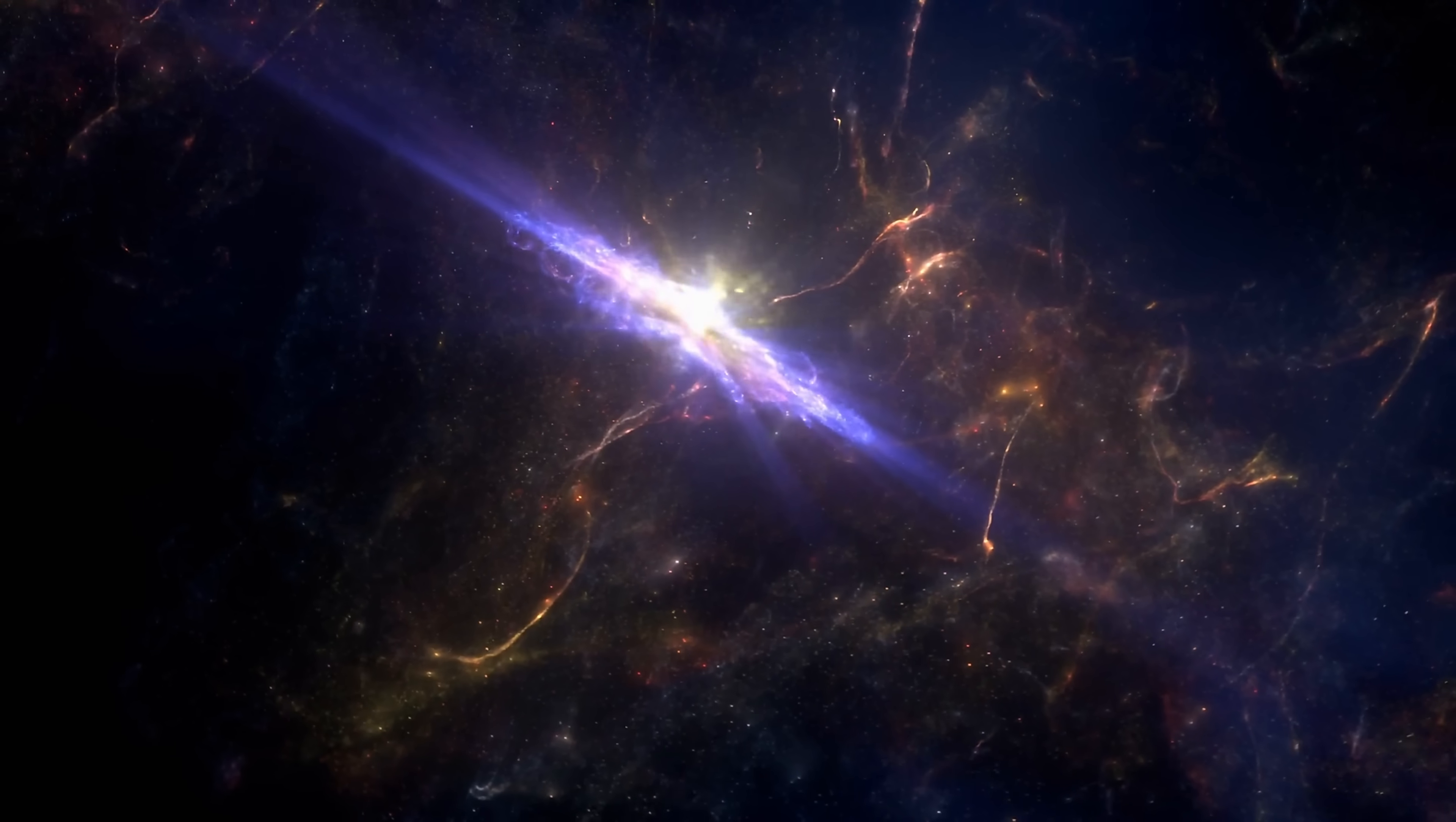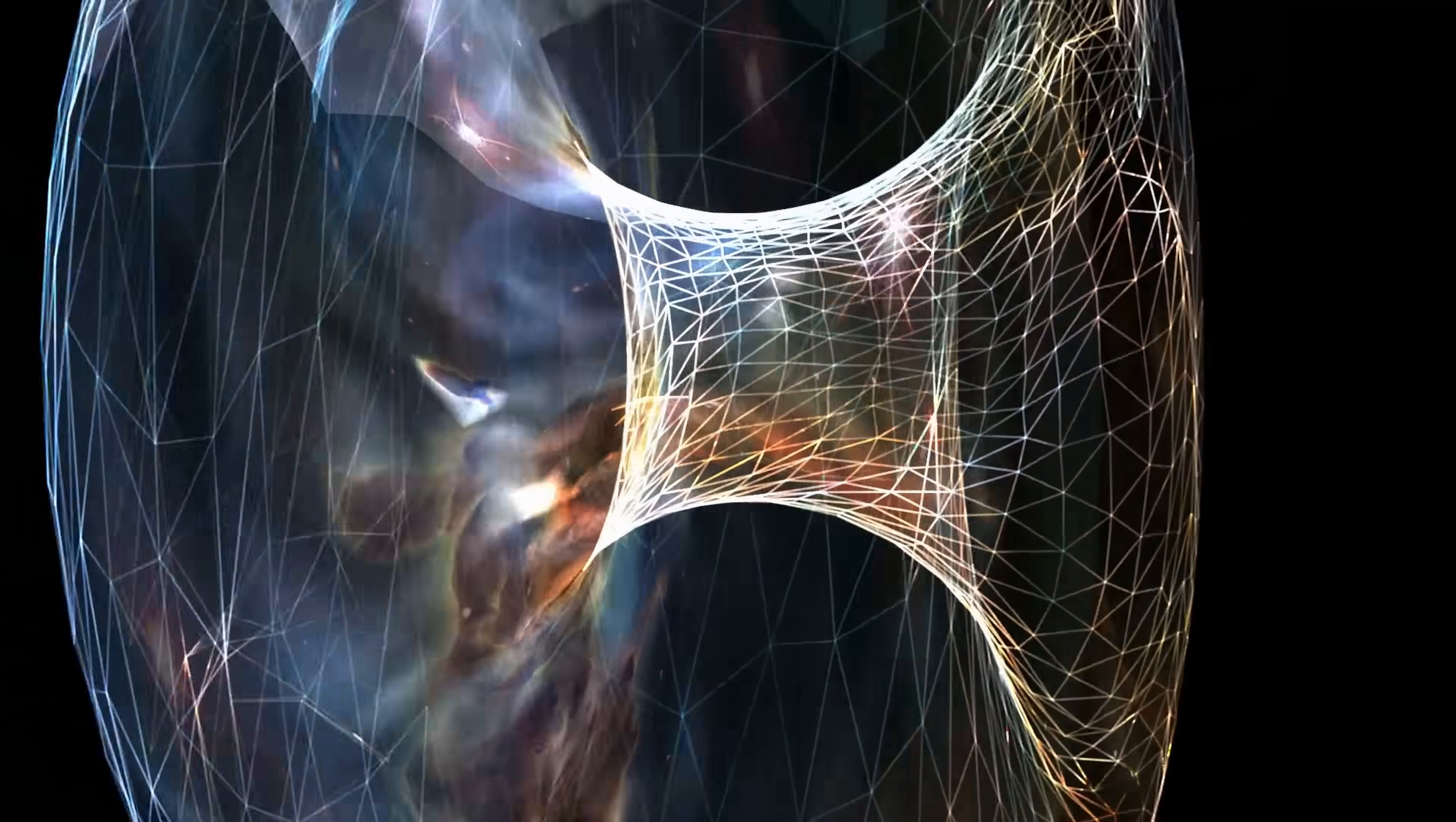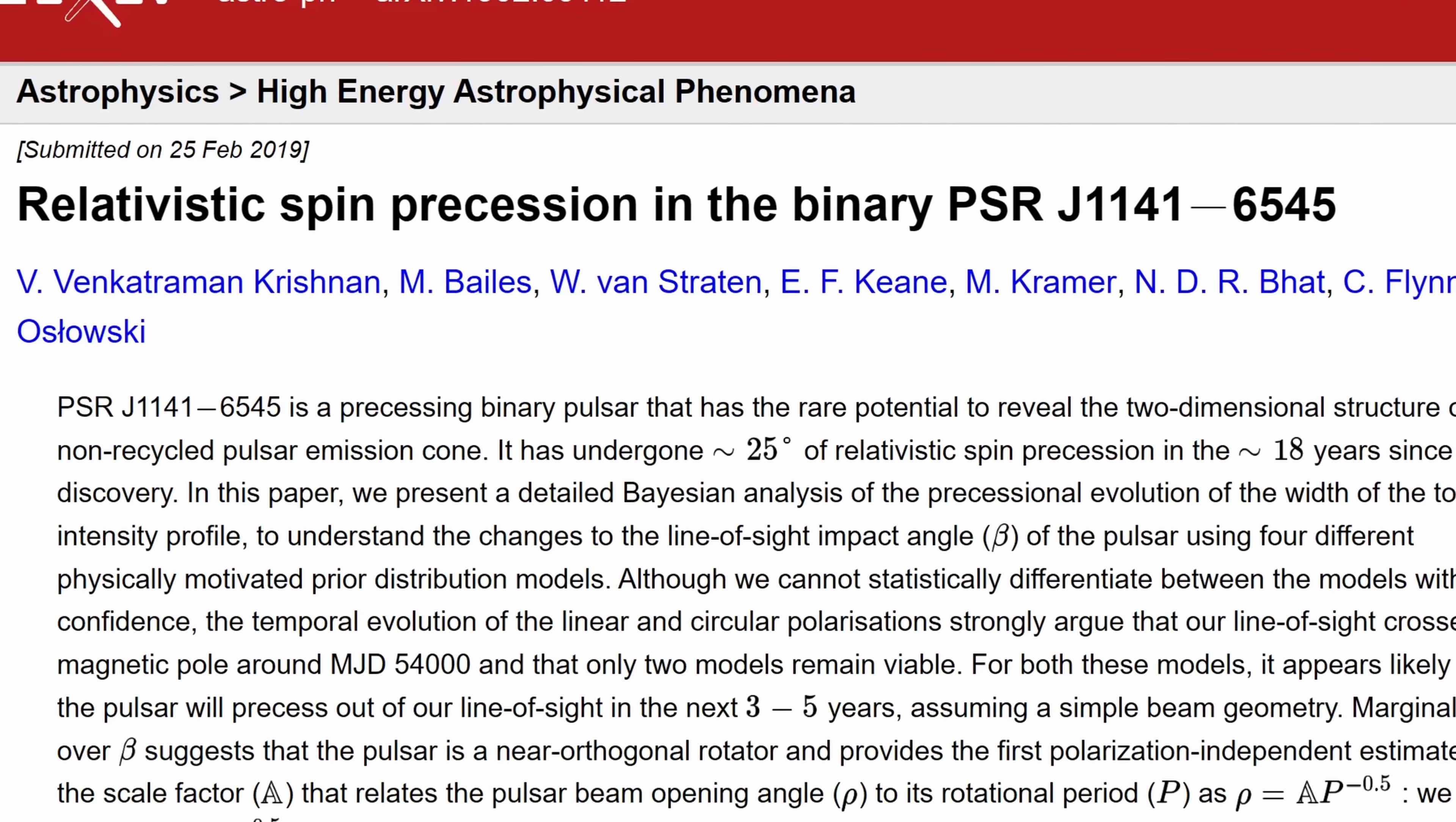And so in this case by precisely measuring pulsations coming from the pulsar and doing so for approximately two decades, scientists detected a long-term drift in the orbital parameters of the system and this change was determined to be specifically caused by the frame-dragging induced by this spinning white dwarf. This was reported in several studies including this one you can find in the description.